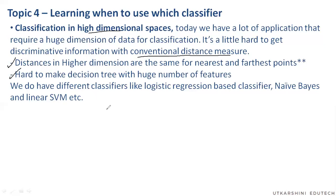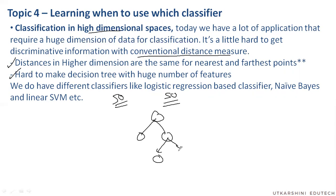Similarly with the decision tree, the problem lies in the height of the tree. Let's say I have 50 different features or 50 different classes. Then even to differentiate — at each level it is able to differentiate between two different classes — it will have 50 different levels. That is the ideal case scenario. But if we have 50 features and 50 different classes, or even 20 different classes, we may have a decision tree which is way too precise.